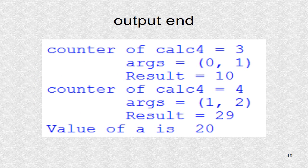These correspond to the calc4 calculations from the for loop. The loop ranges from i equals 0 to i equals 1. We can see the final value of counter in calc4 as 4.